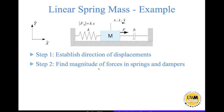Next, we find the magnitude of forces in the springs and dampers. If this mass moves by x in the positive direction, the spring gets extended by x, so the spring force is k times x. Similarly, if the mass moves forward with speed x-dot, the damper gets compressed at that rate. Since this end is fixed, the relative speed between the ends is x-dot, so the damper force is b times x-dot.